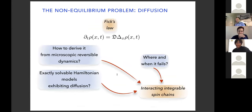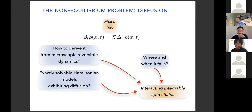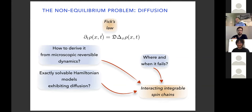Let me quickly introduce the problem. There are a lot of ways to study non-equilibrium, but maybe the simplest is to study linear response of systems. One of the few known laws of non-equilibrium dynamics is Fick's law, which tells you how a macroscopic system behaves at large space and time. It's universal — any microscopic dynamic is expected to reduce to something like this at large scales, with all microscopic interaction hidden in the diffusion constant.